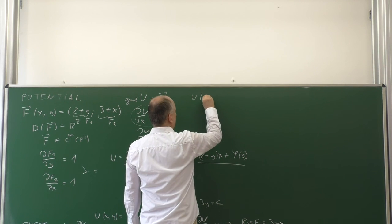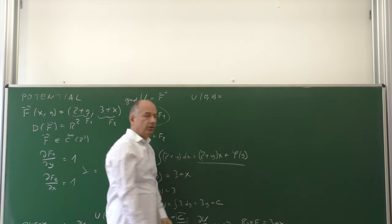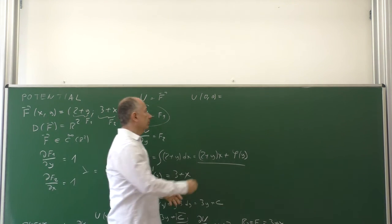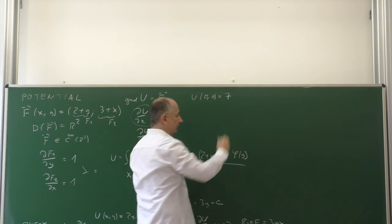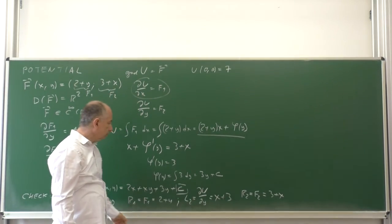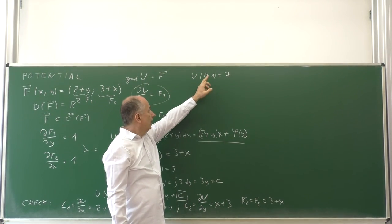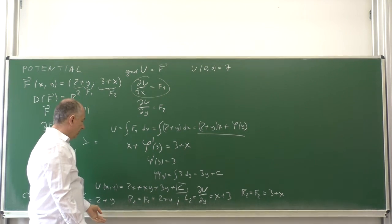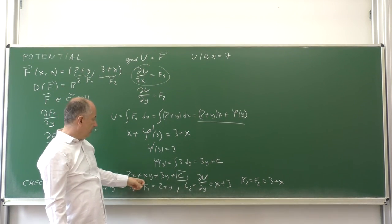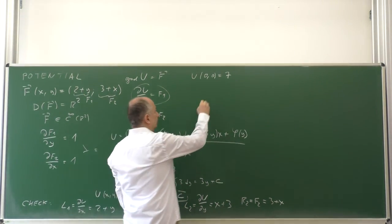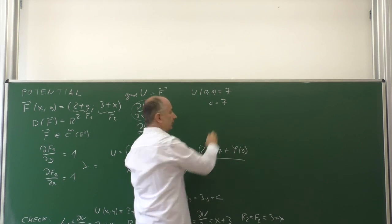Say, if we want potential at the point (0,0) to be equals to 7, for example. Then, substituting 0 for x, 0 for y, evaluating this expression, we have 0 plus 0 plus 0 plus c equals 7.